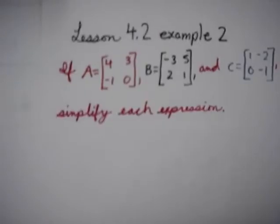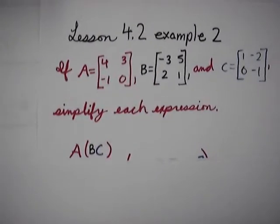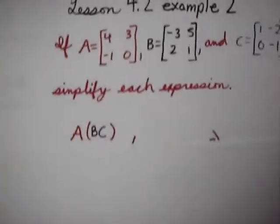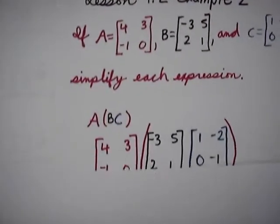First, let's look at A times B times C. A times B times C looks something like this when written out as a matrix.